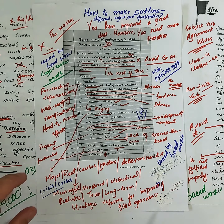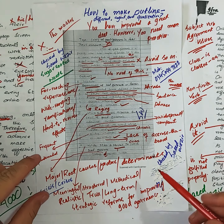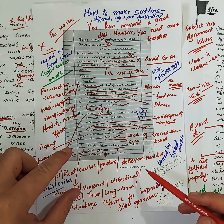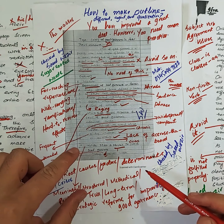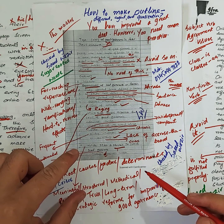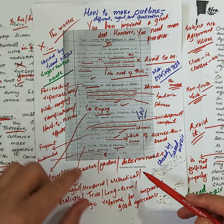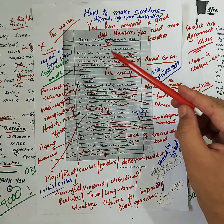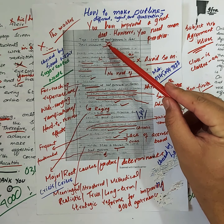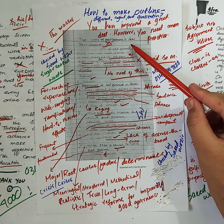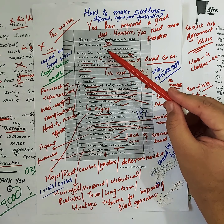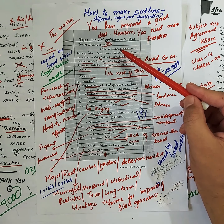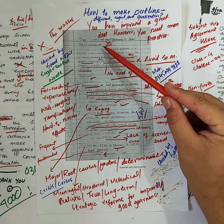Dear students, this is an essay I have evaluated. The outline is based on two pages. If you focus on the topic: 'Crisis of Good Governance in Pakistan.'